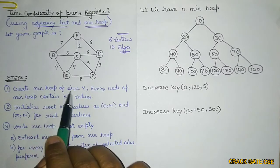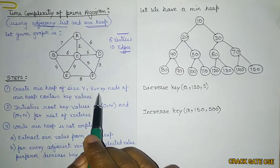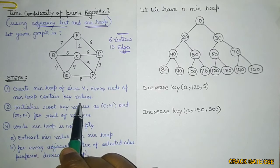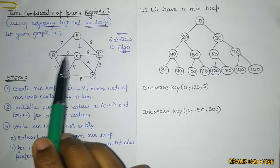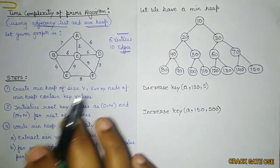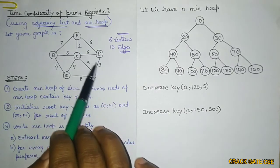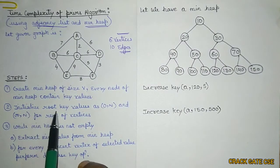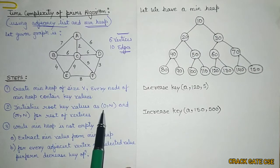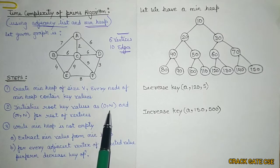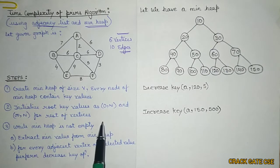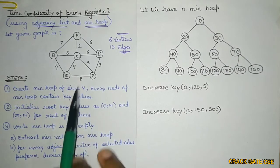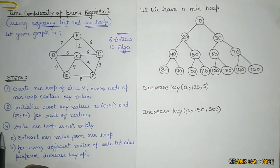We create a min heap of size V where every node contains a key value. While creating the min heap, we initialize values for each vertex. The second step is to initialize the root key value as 0 and null — 0 is the minimum cost to reach that node, and null means there is no parent. The third step is: while the min heap is not empty, repeat the following steps.